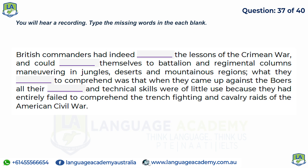British commanders had indeed learned the lessons of the Crimean War and could adapt themselves to battalion and regimental columns maneuvering in jungles, deserts, and mountainous regions. What they failed to comprehend was that when they came up against the Boers, all their tactical and technical skills were of little use, because they had entirely failed to comprehend the trench fighting and cavalry raids of the American Civil War.